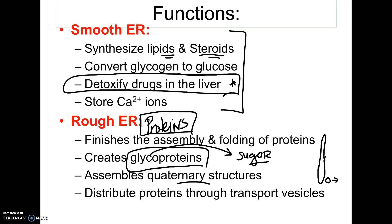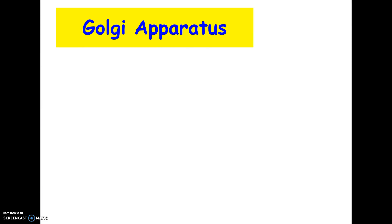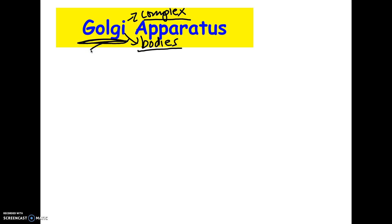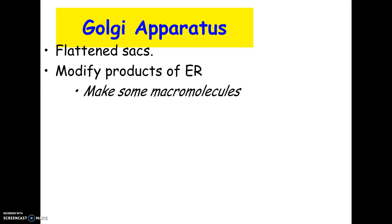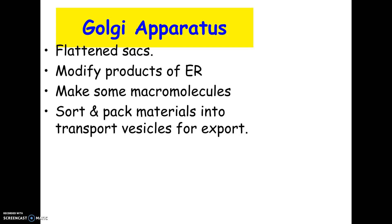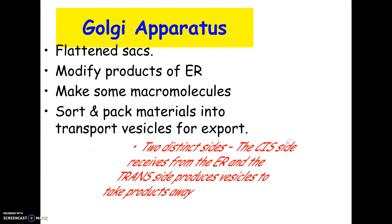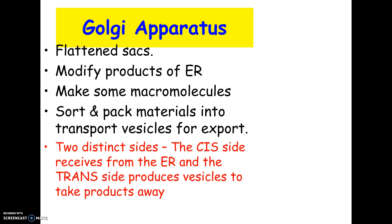The Golgi apparatus — sometimes called the Golgi complex or Golgi bodies, all the same thing — consists of flattened sacks that look like a stack of pancakes. What it does is modify the products of the endoplasmic reticulum and package them for export. The ER modifies a protein and sends it to the Golgi; the Golgi packs it up and sends it to the cell membrane for export. The cis side is where stuff comes in and the trans side is where it exits.